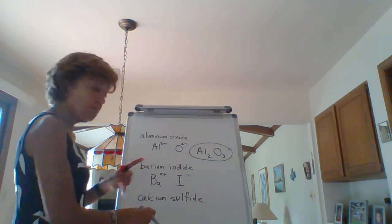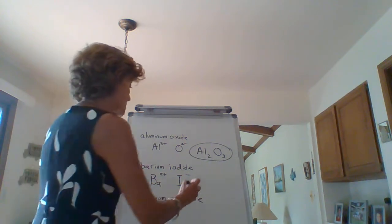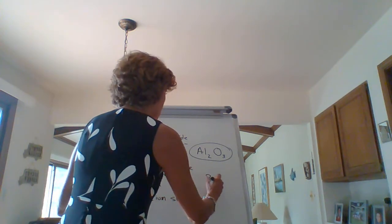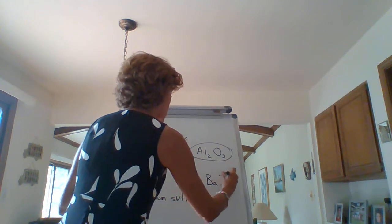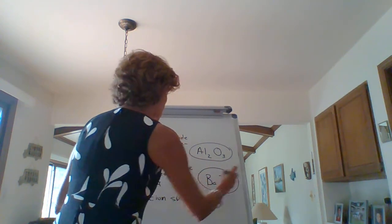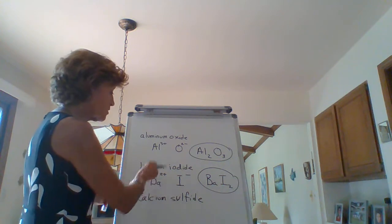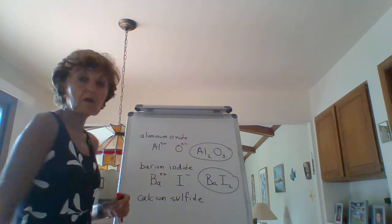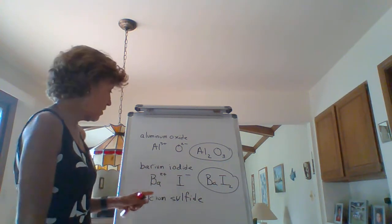We crisscross the numbers, not the pluses and the minuses. And then you have BaI2. Because this is a 1 here, we just never show a one. Crisscross the 1 here, the 2 here. You've got barium iodide.